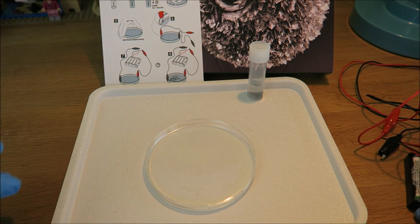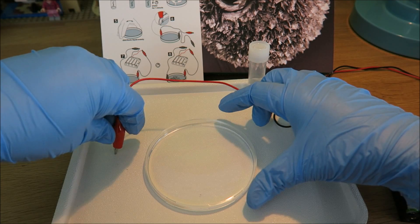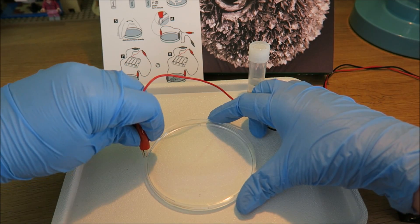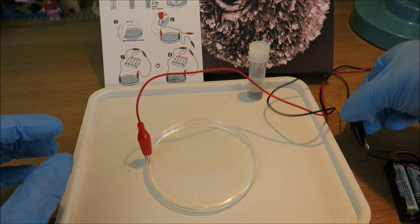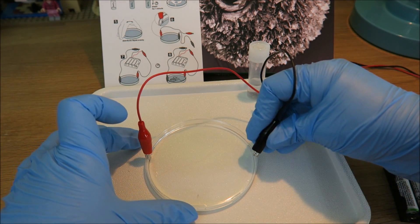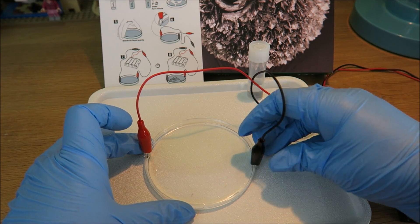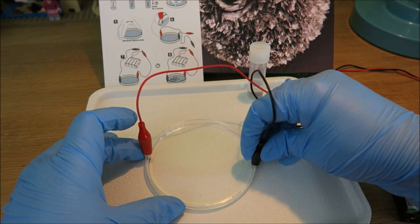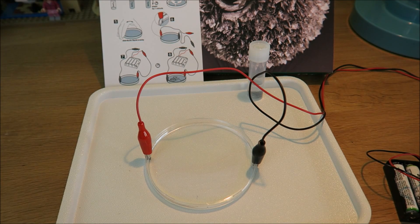And then I have my power pack with my red and black cables. Pop those on there, either side of the petri dish. Get that deep down into the liquid and we watch what happens.